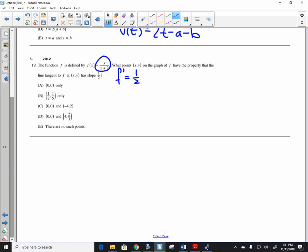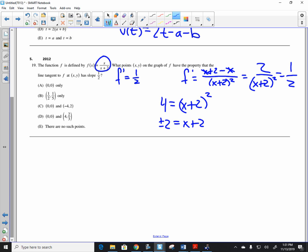Quotient rule. Derivative of the top, 1 times the bottom, minus the top times the derivative of the bottom, 1 over the bottom squared. So those cancel. I get 2 over x plus 2 squared. You're wondering when is that equal to 1 half? Well cross multiply, I get 4 is equal to x plus 2 quantity squared. Solve that and you get plus or minus 2 when you square root both sides equal to x plus 2. Subtract the 2 and x is equal to negative 2 plus or minus 2.